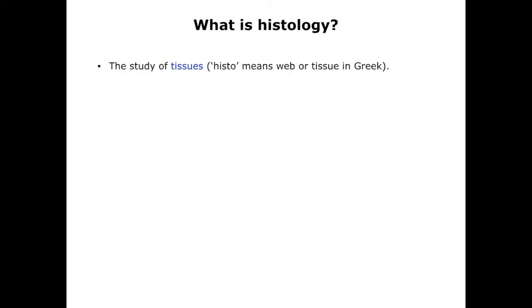Answering the question, what is histology, seems a good place to begin, though you will see that arriving at an answer is not a simple matter. The typical dictionary definition is that histology is the study of tissues. Histo means web or tissue in Greek. However, you may not be entirely sure what tissues are, and in this case the definition is not very satisfying. We will discuss tissues in a few slides, so don't worry about that for now.